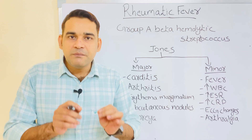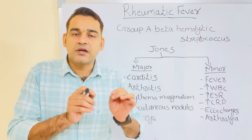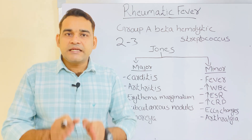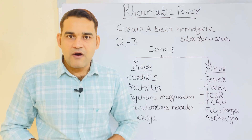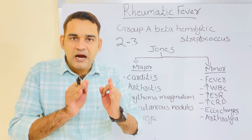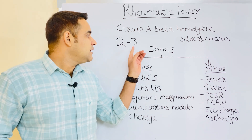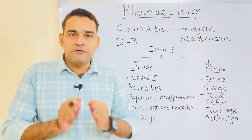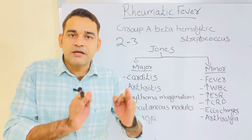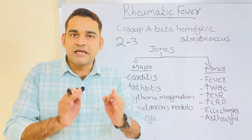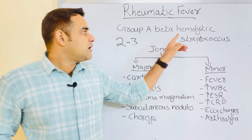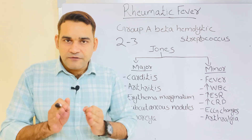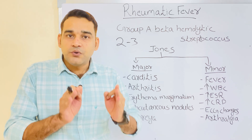Before rheumatic fever occurs, there will be a history of throat infection two to three weeks before. When collecting history from a rheumatic fever case, you have to collect the history of previous throat infection two to three weeks prior. If the throat infection with Group A beta-hemolytic streptococcus is not treated properly, it leads to rheumatic fever.